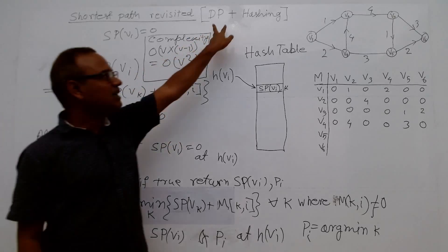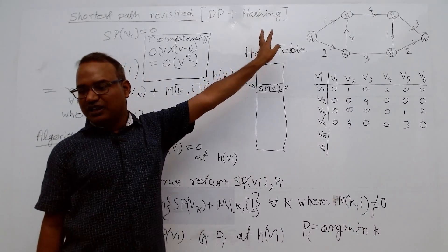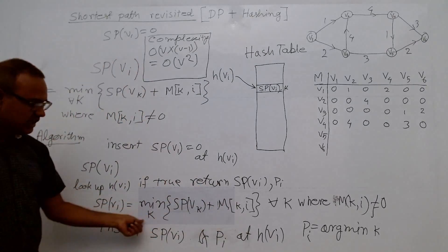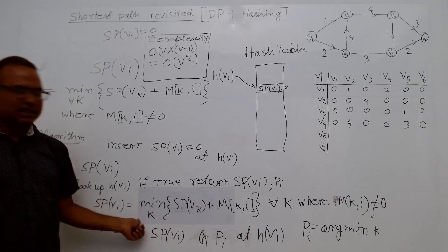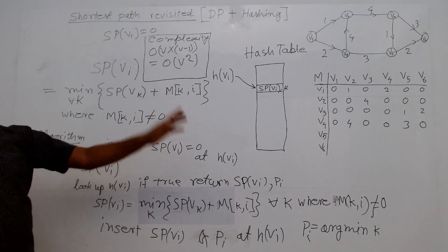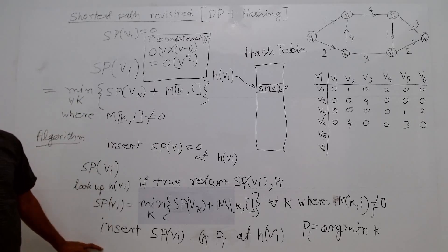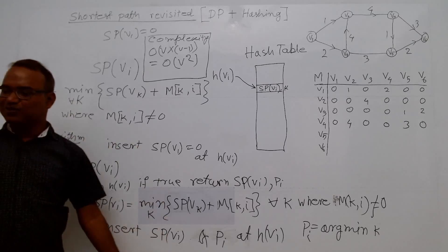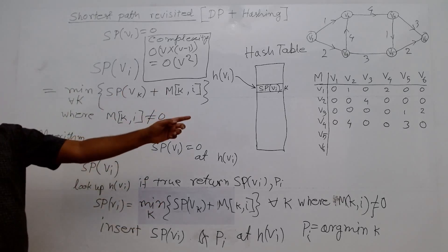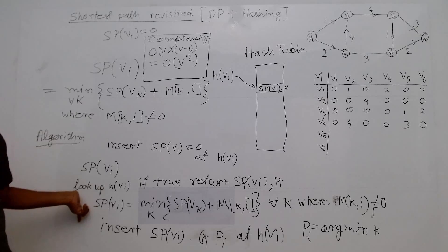Dynamic programming boosted with hashing is a beautiful technique and can be used for other recursions as well — not just computing max or min. Use a hash table, not just an array. Write the program using recursion directly. No need to write many for loops — just compute the recursion along with the hash table. This implementation is much easier.